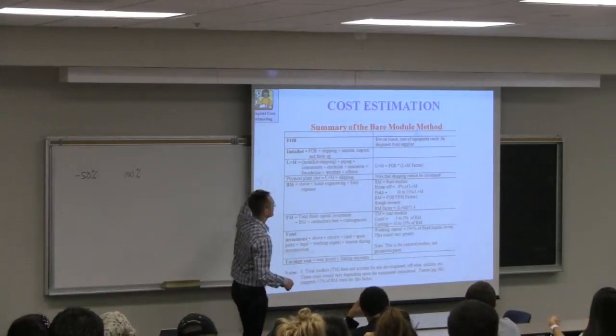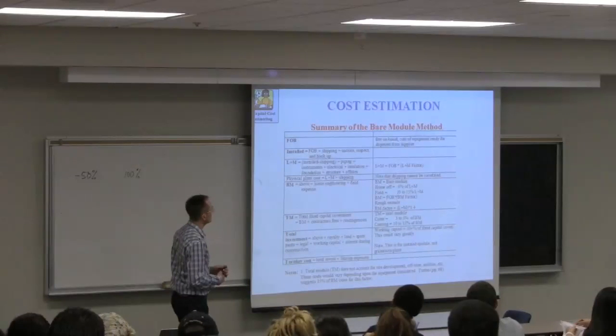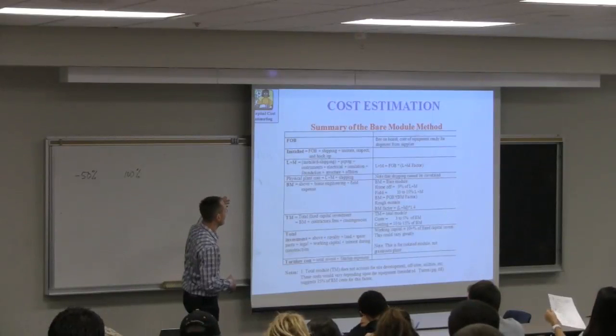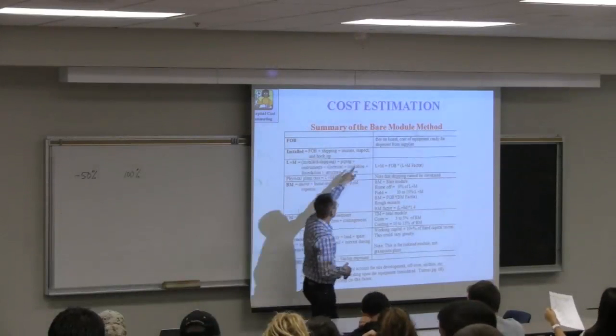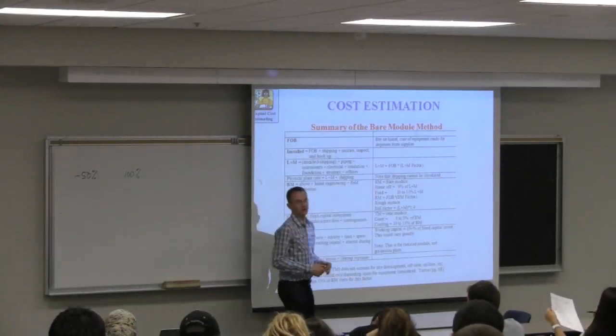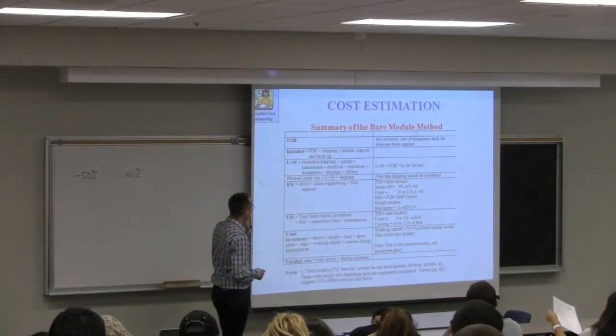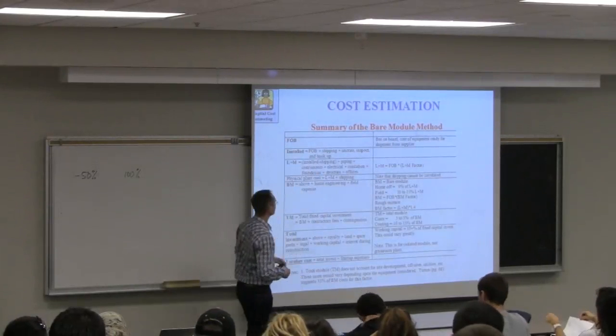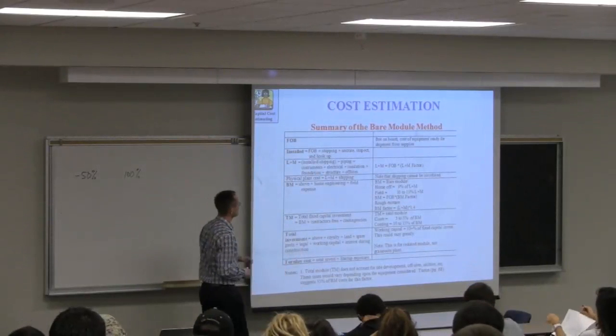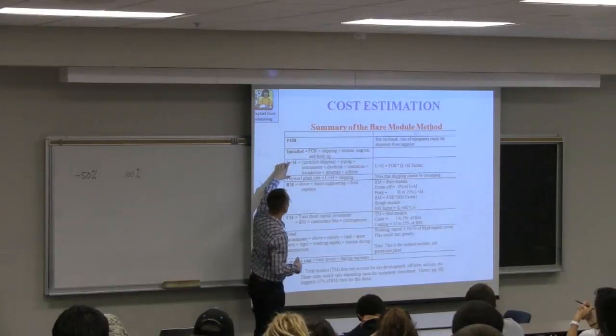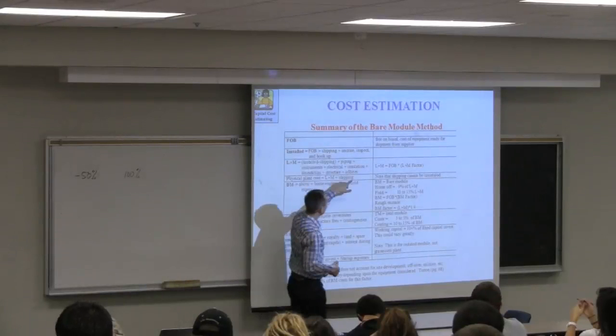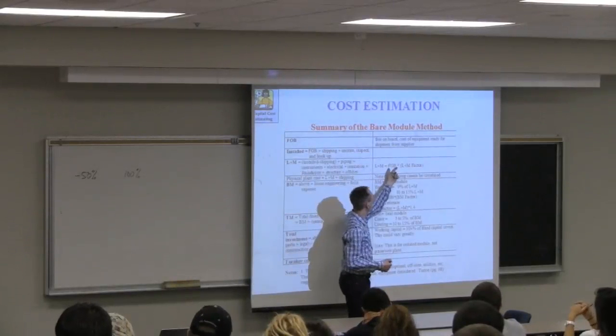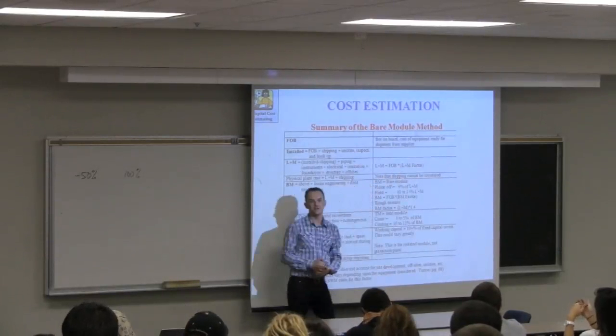Here's what we're going to do. We've got our FOB price. This is the quotation from our supplier. Our supplier is saying you can pick up this equipment from our loading docks at my location and that's the price you're going to pay for it. Then we're going to add in shipping and crating and inspection. If we look at that, that's the installed cost. Then there's labor and materials cost. This is an additional factor.